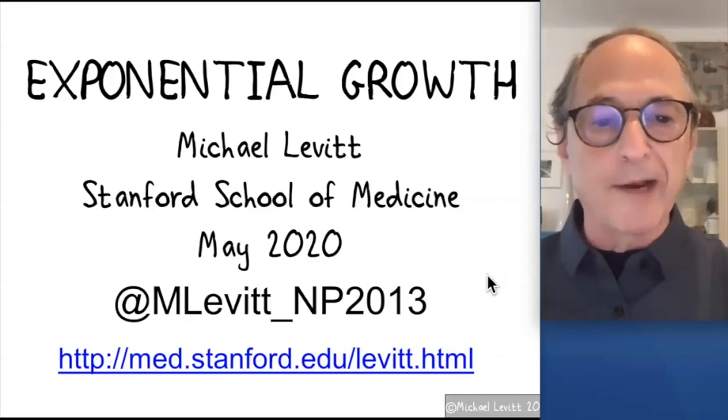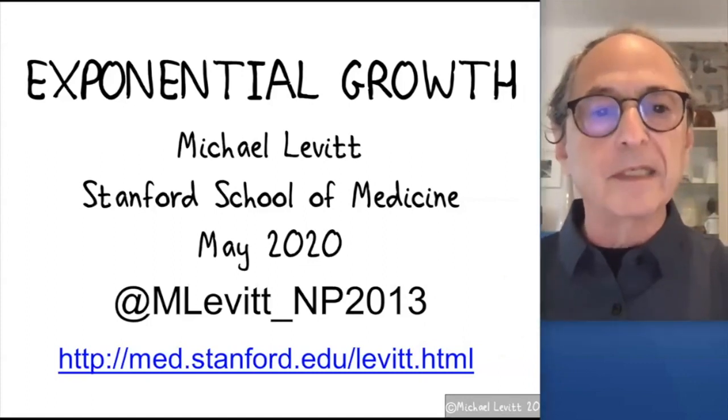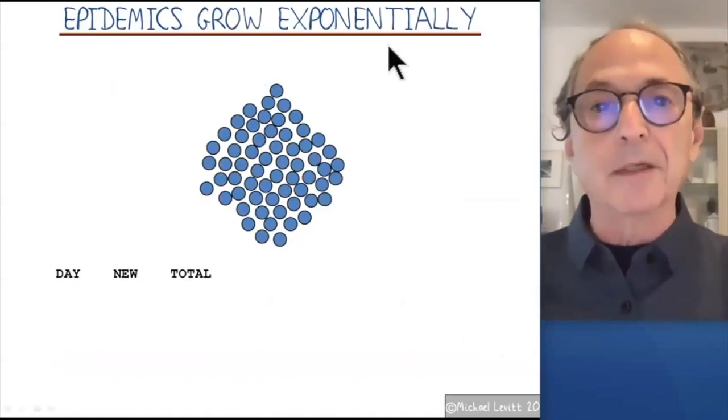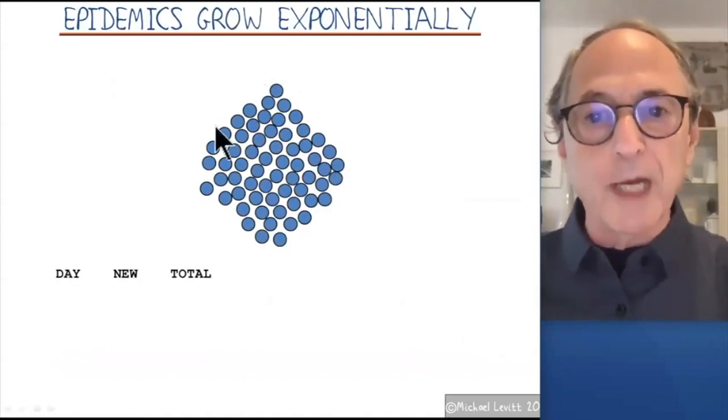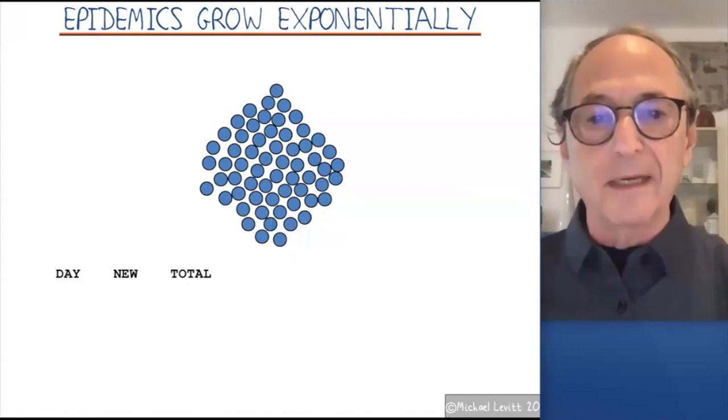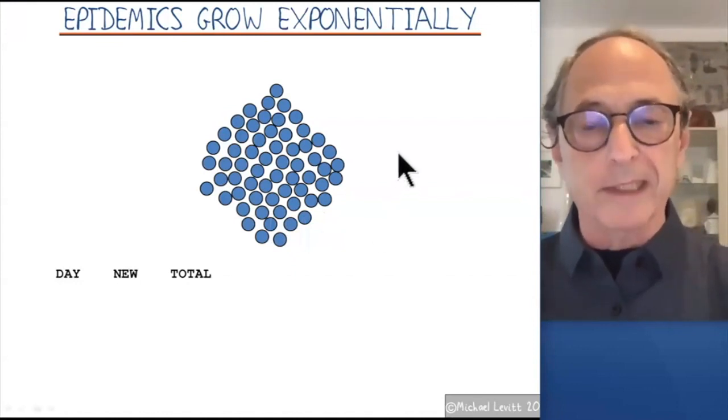So why do we want to care about exponential growth? The reason is that people believe, which is a good reason, that epidemics grow exponentially. So how are we going to have an imagined group of people? Blue means they're unaffected. We're going to then have an infection start at one place and watch how the infection spreads.